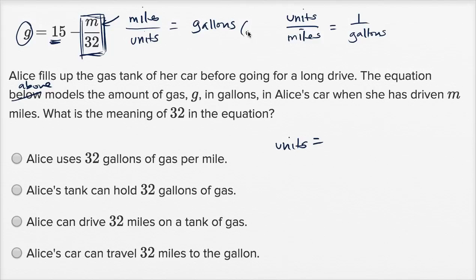The mystery units are going to be, if you multiply both sides by miles, both sides by miles, your mystery units are going to be miles per gallon.